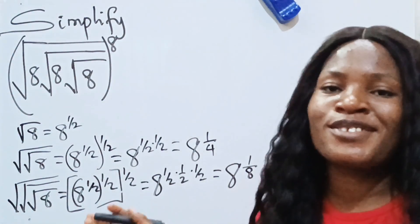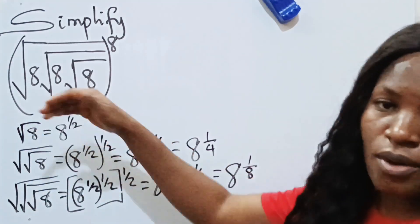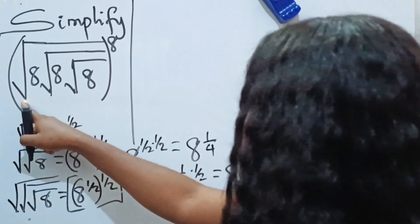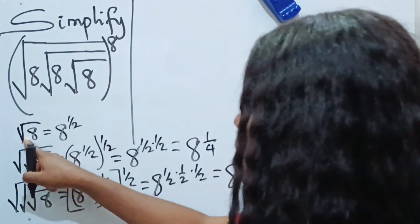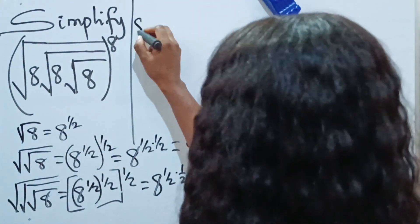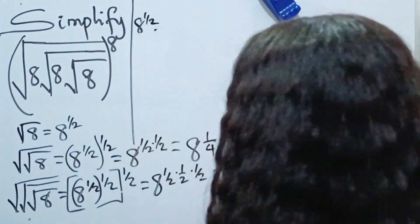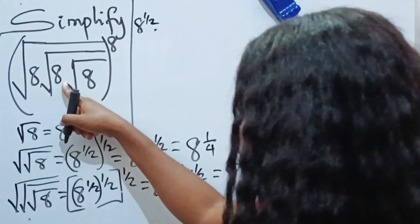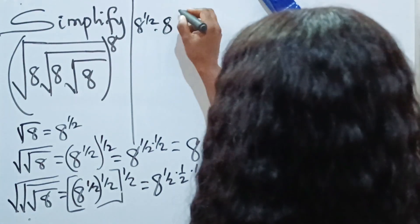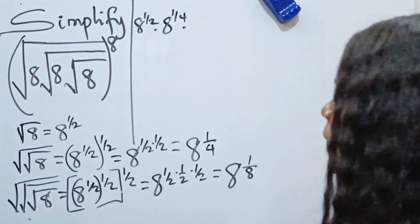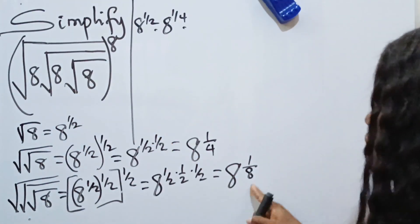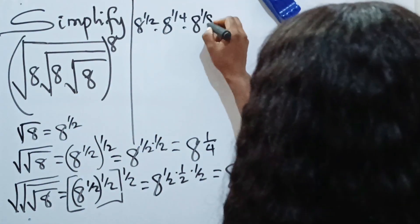Now it's time for us to substitute these back. We have the square root of 8 — that's the first one — which I'm going to replace with 8 to the power of one half. Then multiplied by the square root of the square root of 8, which is 8 to the power of one quarter. Then multiplied by the square root of the square root of the square root of 8, which is 8 to the power of one eighth. Everything is raised to the power of 8.